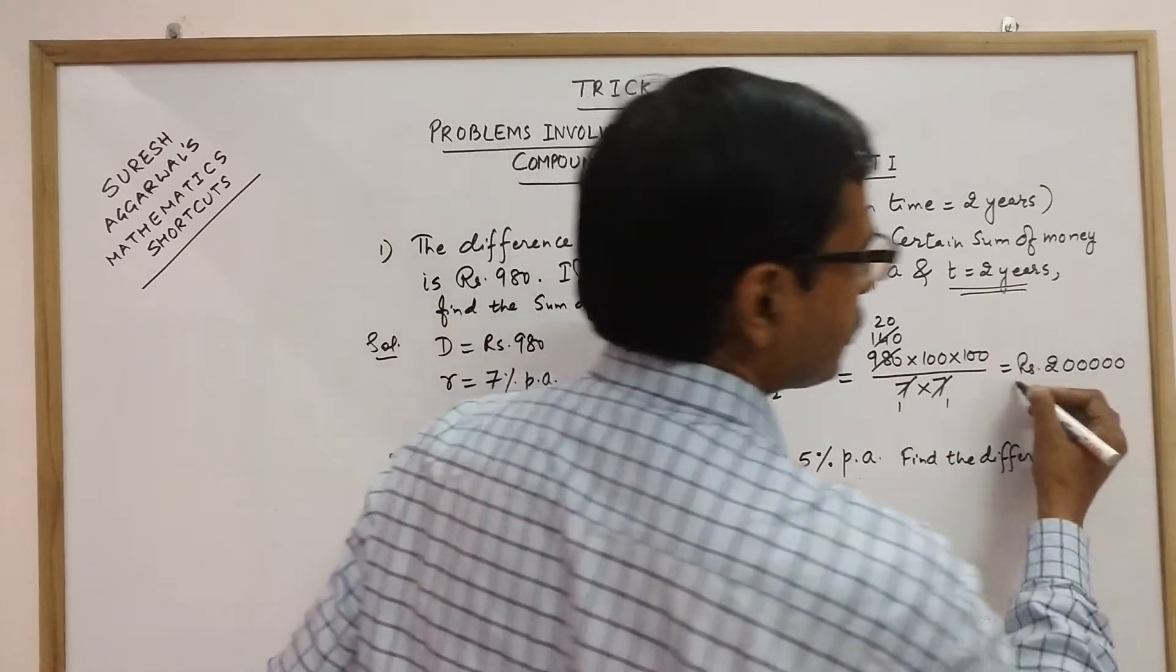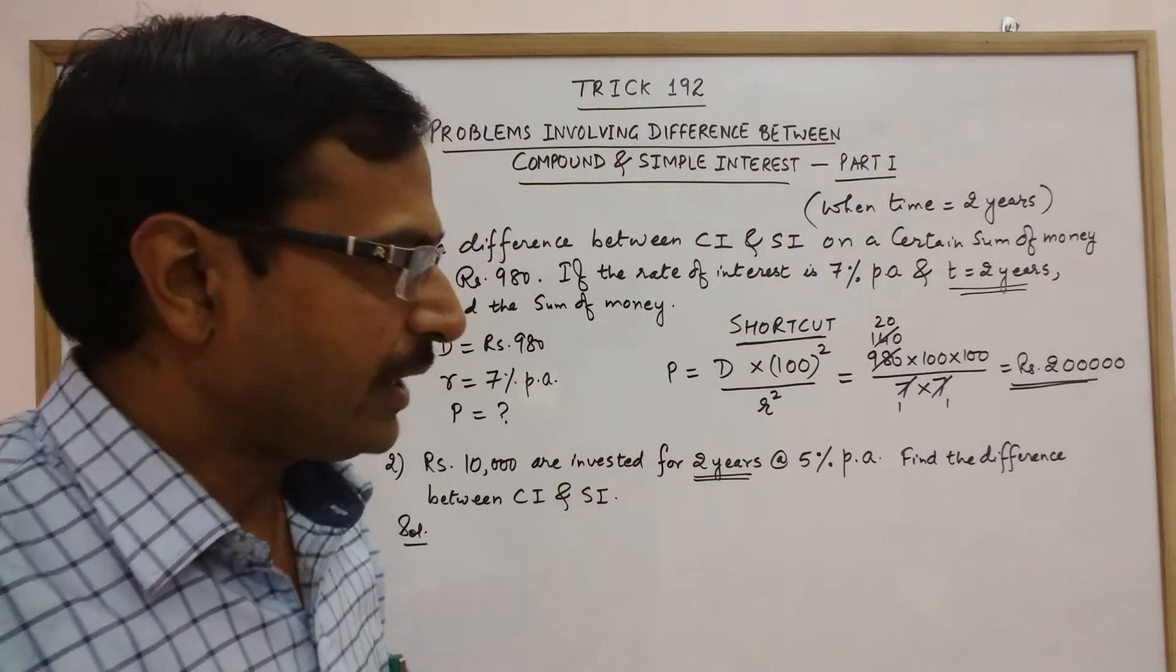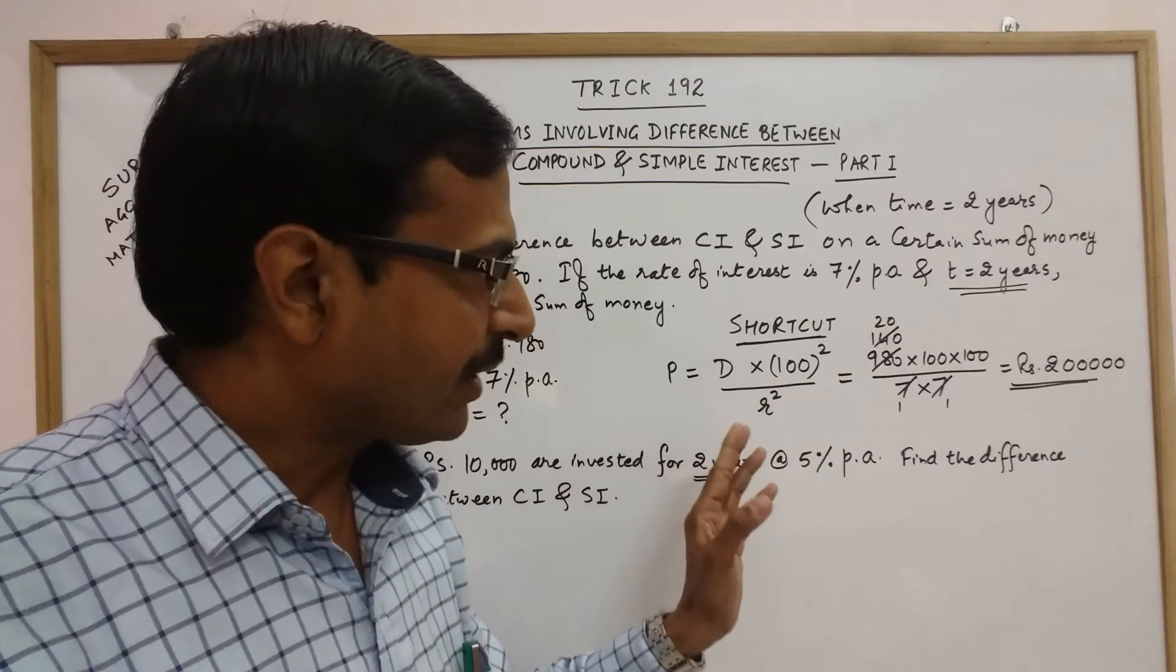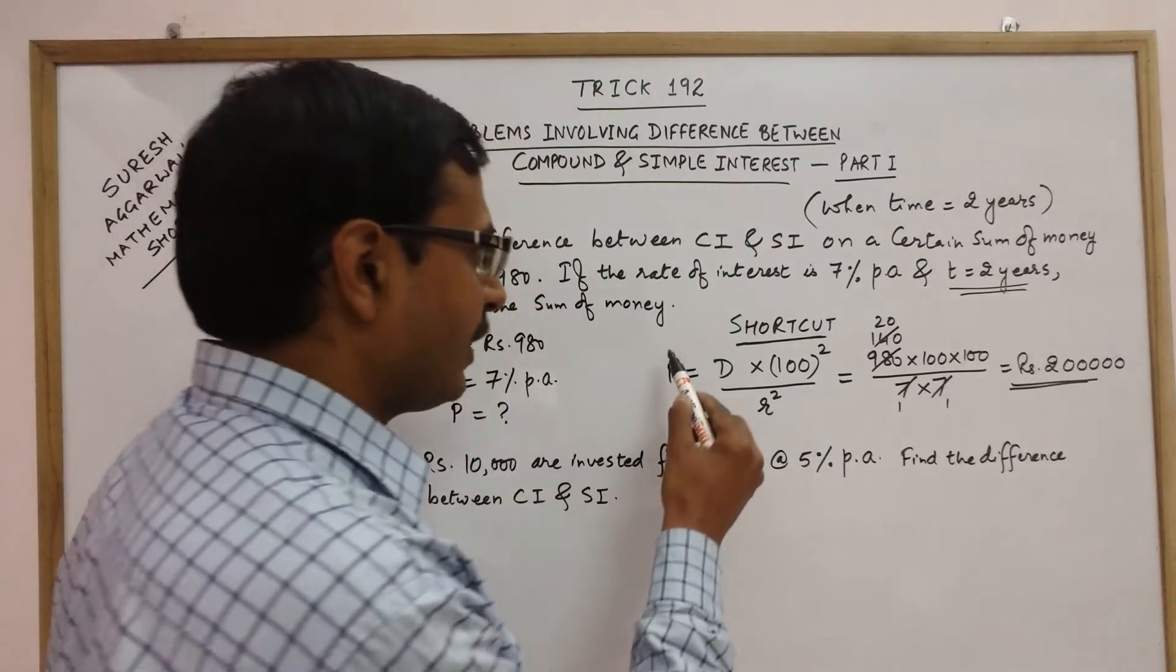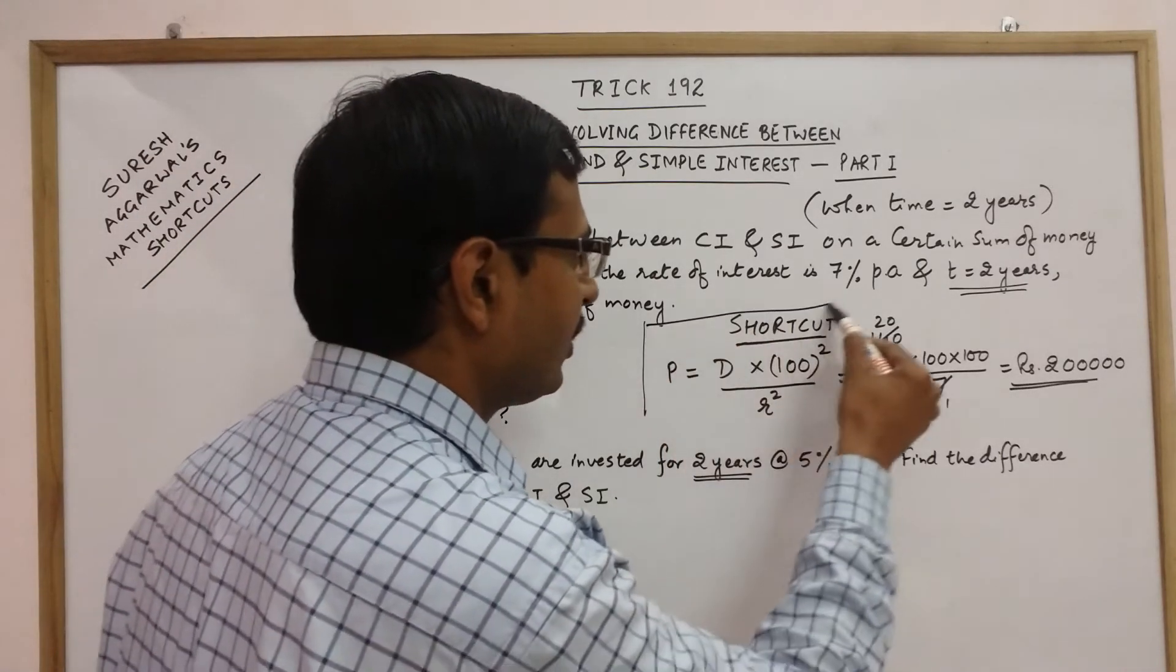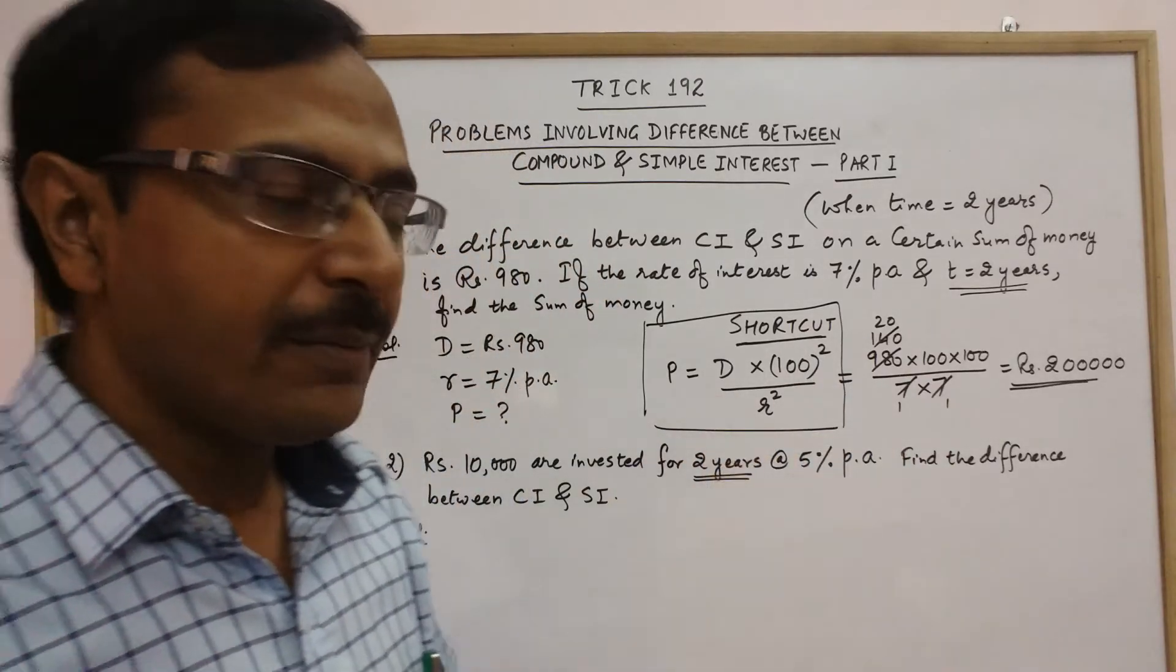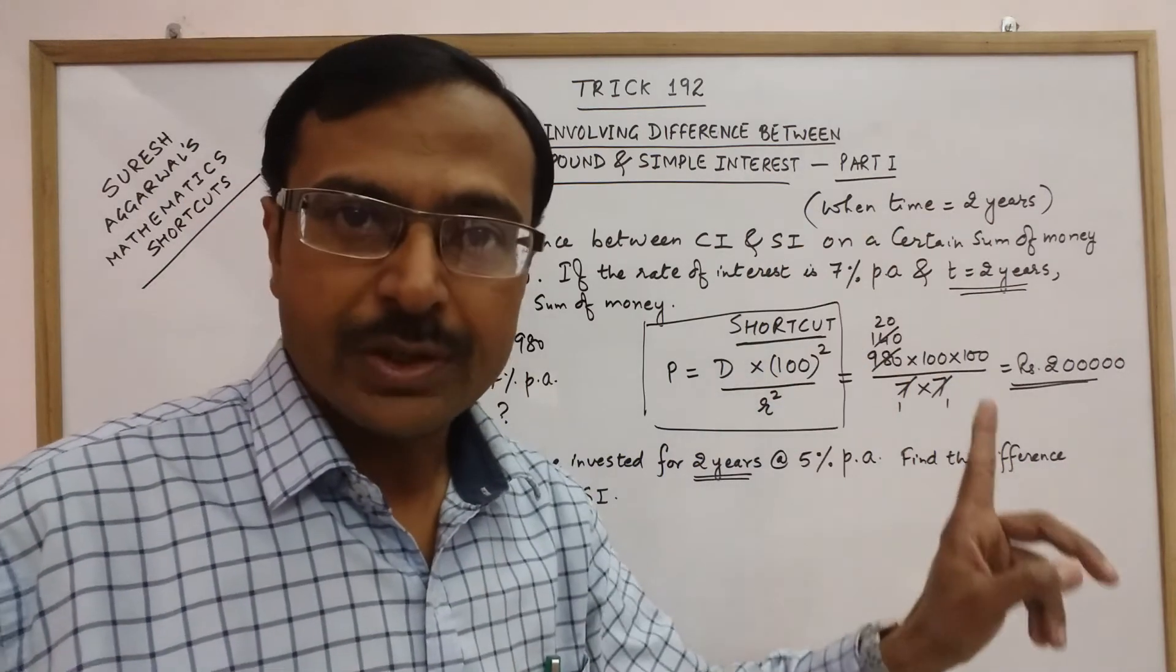So rupees 2 lakh is the principal amount. No lengthy calculations, very compact and time saving method to find the principal amount. Remember this shortcut can be applied only when the time given is 2 years.